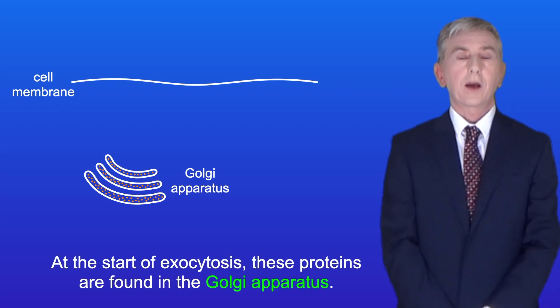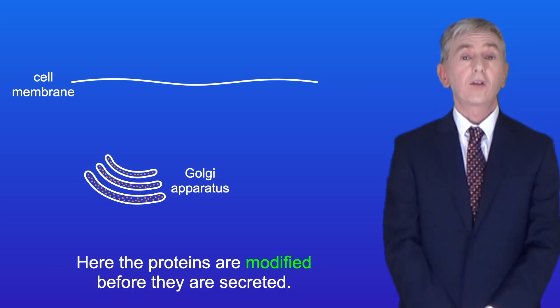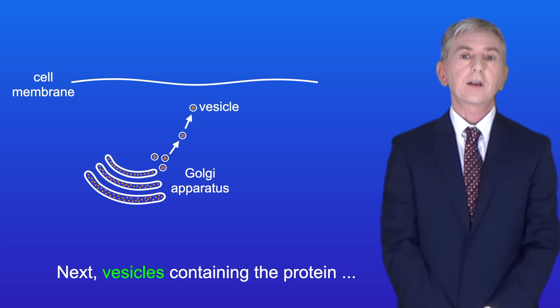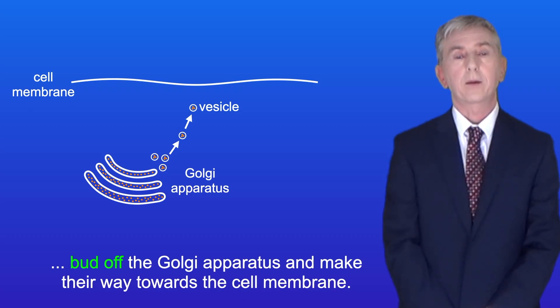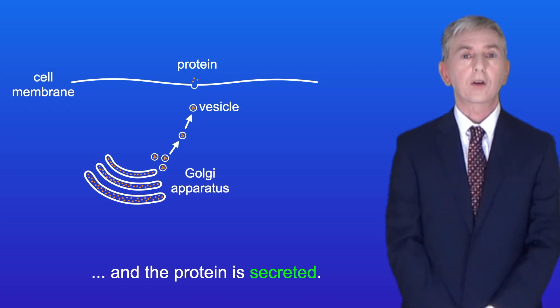At the start of exocytosis, these proteins are found in the Golgi apparatus. Here the proteins are modified before they're secreted. Next, vesicles containing the protein bud off the Golgi apparatus and make their way towards the cell membrane. The vesicles then fuse with the cell membrane and the protein is secreted.